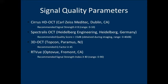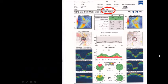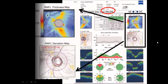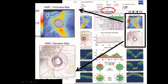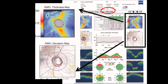Different machines have different signal strength scales. The printout shows the thickness of the nerve fiber layer in an area 6 by 6 millimeters around the disc, and a deviation map showing how the thickness compares to normal. If within the normal range, the area is gray; if outside the range, it will be yellow or red. Yellow means the value occurs in only 5% of normals, and red means it occurs in only 1% of normals.